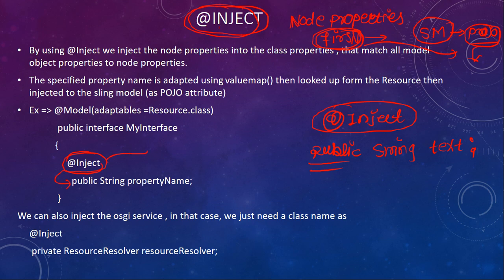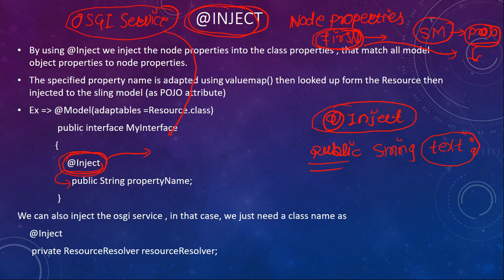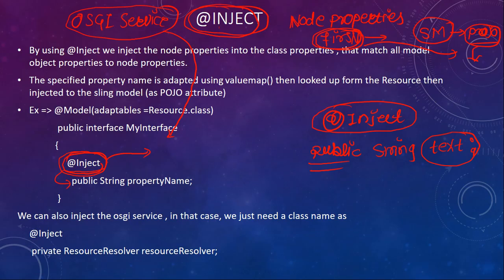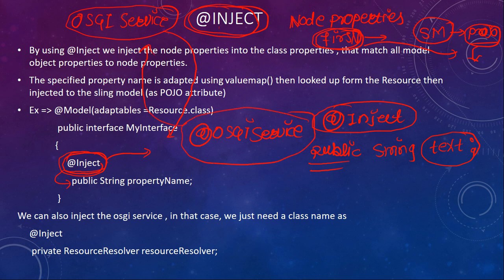@Inject is not only used for properties. If you want to inject a service — like an OSGi service — you can also do that using @Inject. However, they have introduced a separate annotation specifically for this: @OsgiService. Using @OsgiService, you can easily inject all your OSGi services.